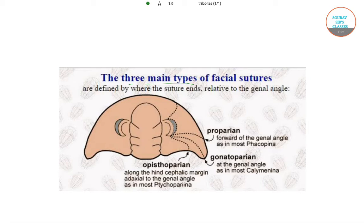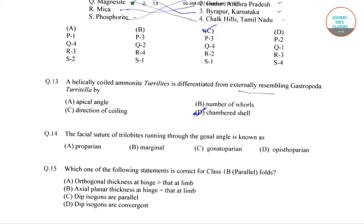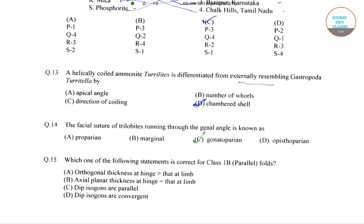From this we can say that the answer to the question is gonatoparian, as it is at the genal angle, as in most Calymenina. So the correct answer to the question — the facial suture of trilobites running through the genal angle is known as gonatoparian — that is option number C.